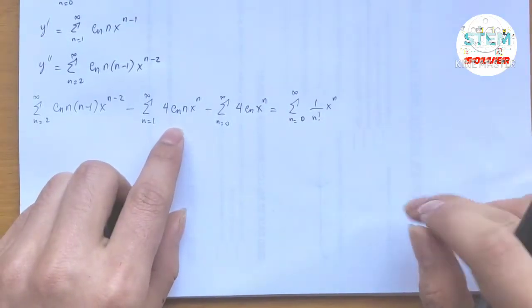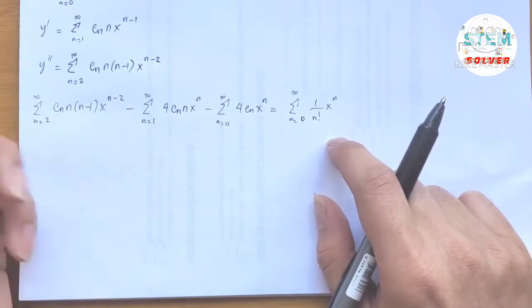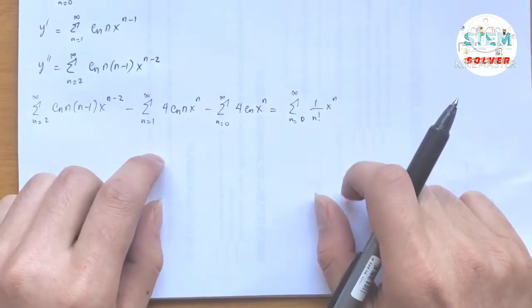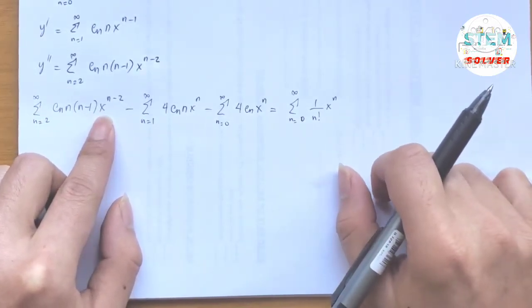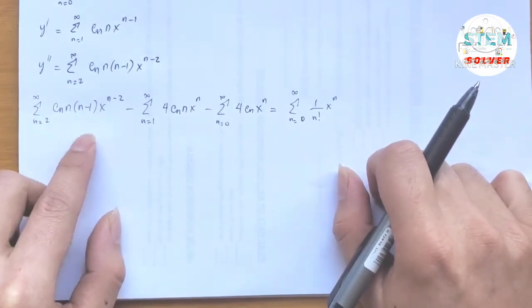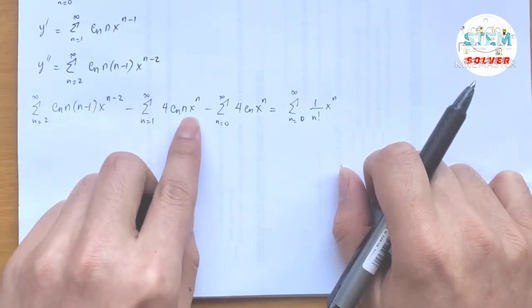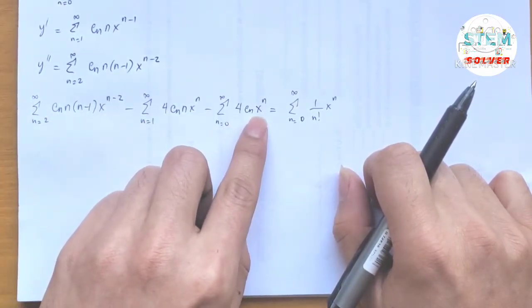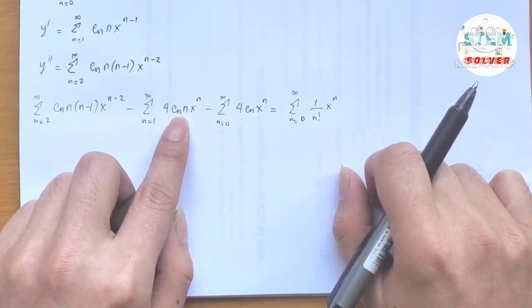Now we need to run out terms and combine like terms. Looking at the powers of x: for the second derivative series n=2 gives x to the 0; for the first derivative series n=1 gives x to the first; for the third series n=0 gives x to the 0. So x to the first is the highest exponent, meaning we must run out terms for the first two power series.